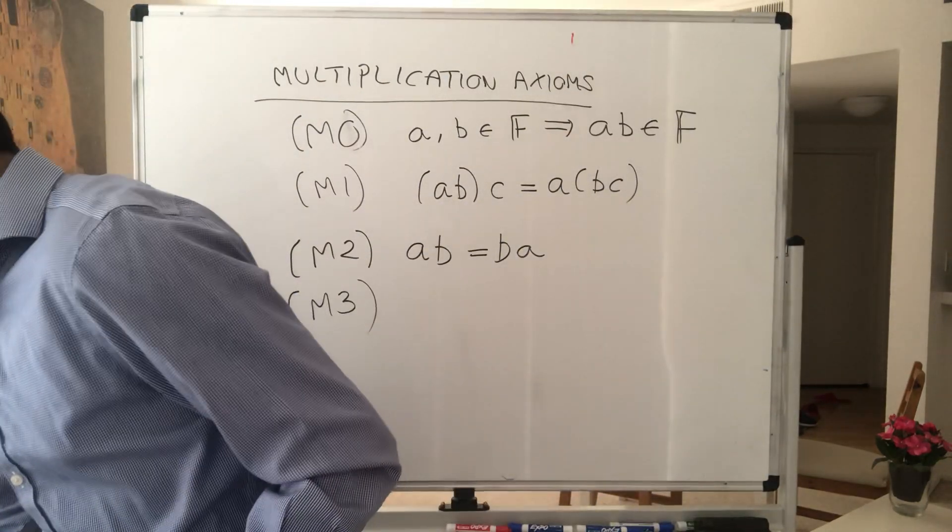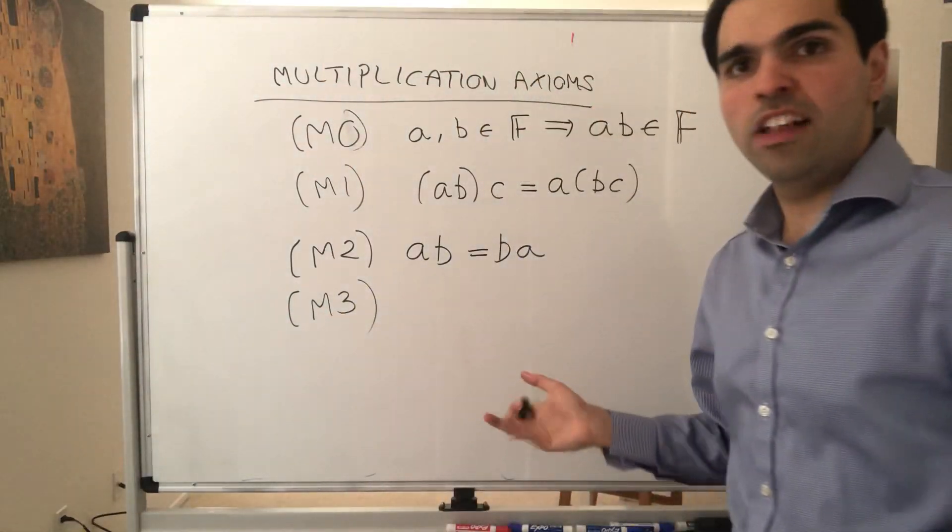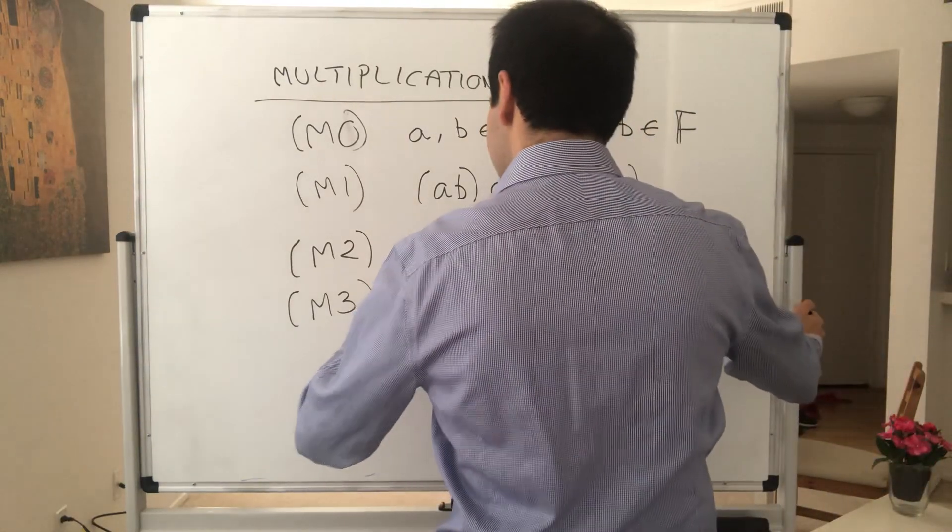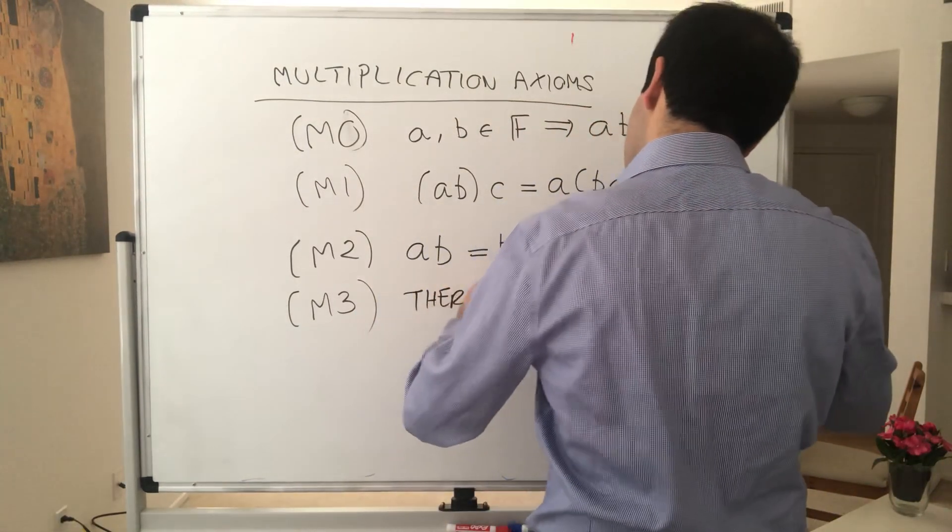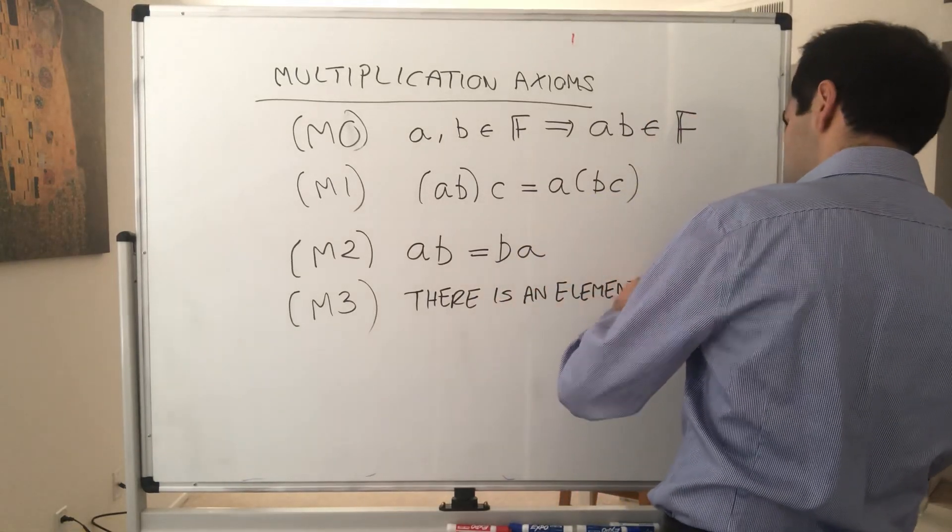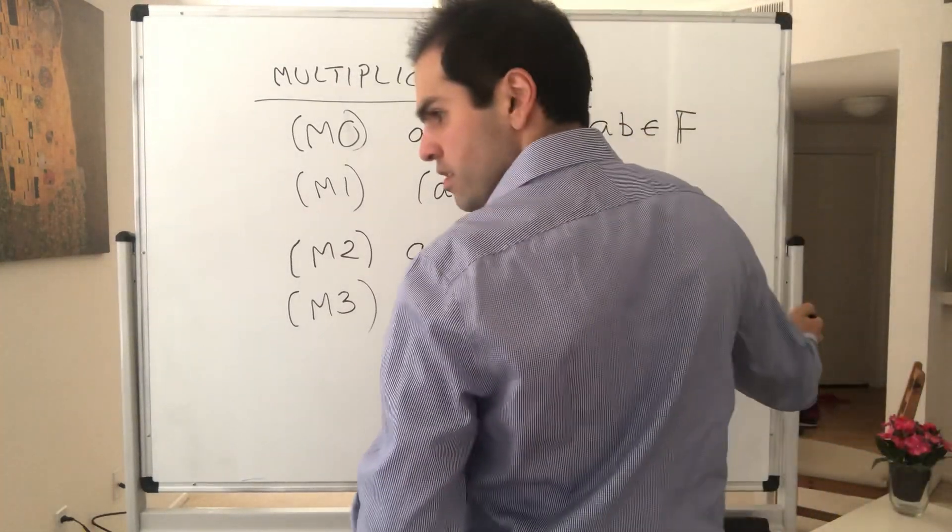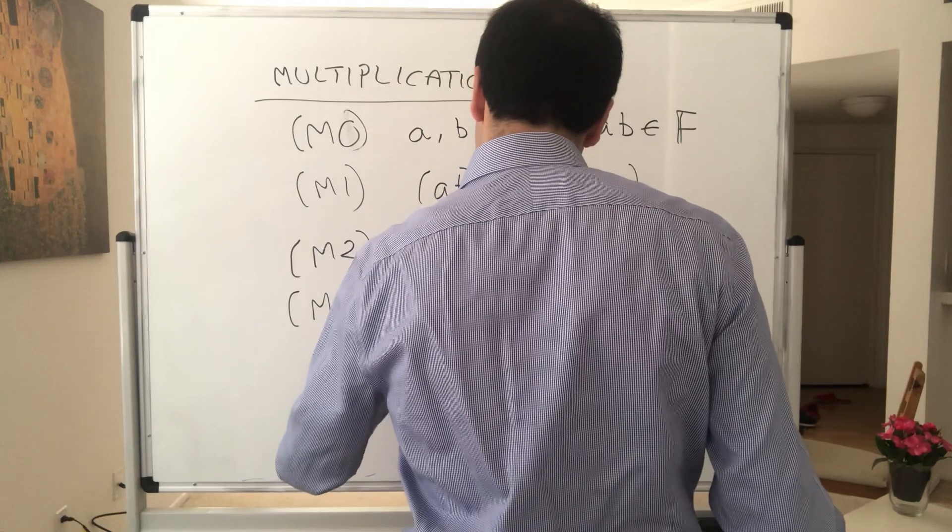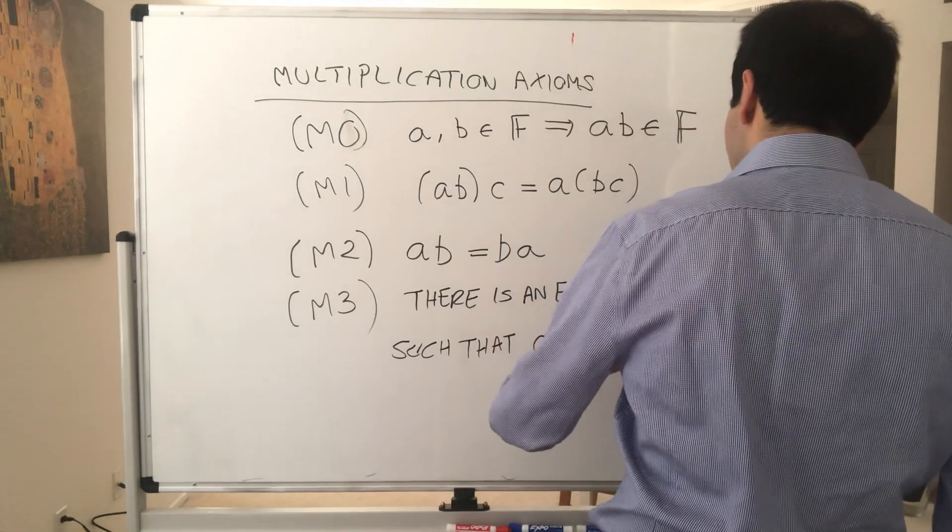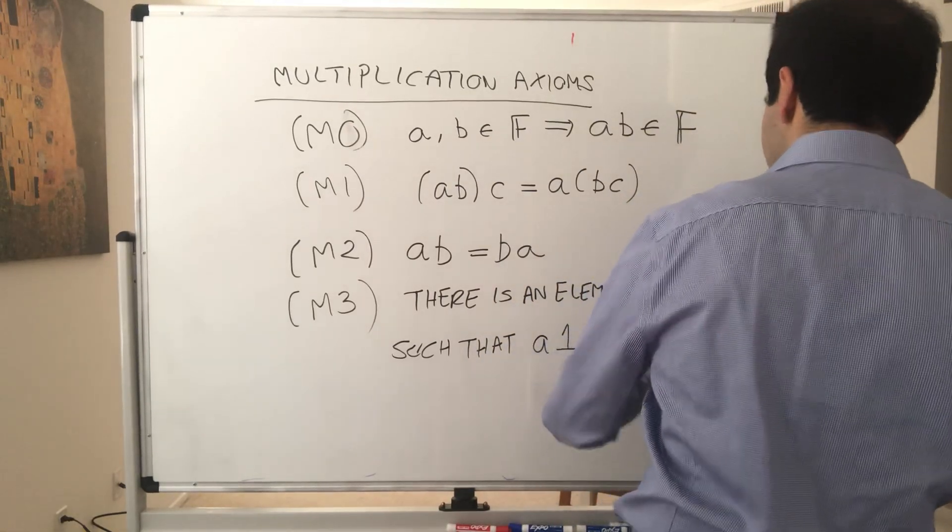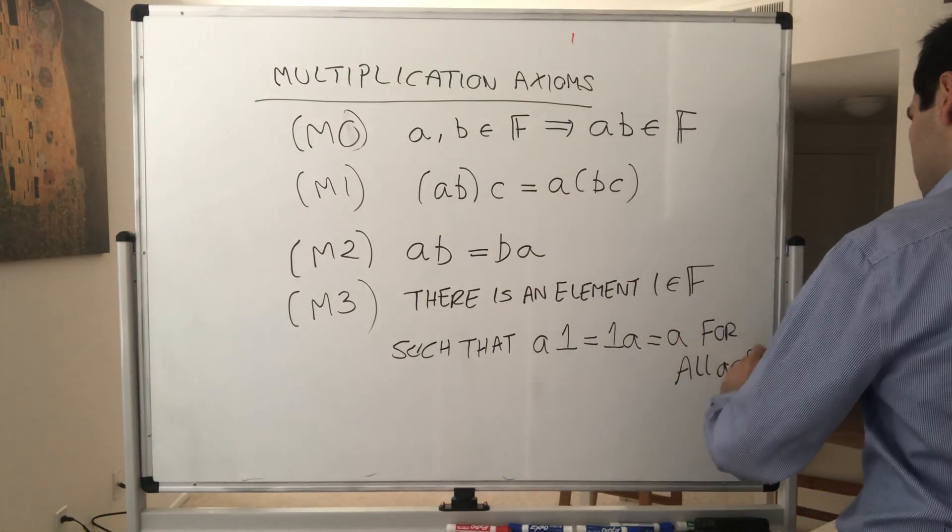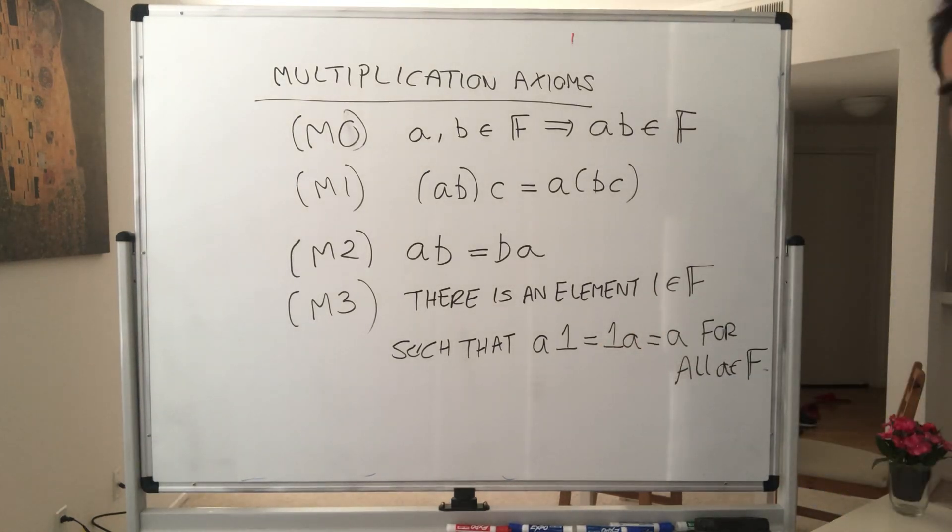And then, before we had the zero element, which did nothing, now we have a one element. So there is an element one in F such that, again, a times one equals one times a equals a for all a. In other words, one does nothing but multiplication-wise.